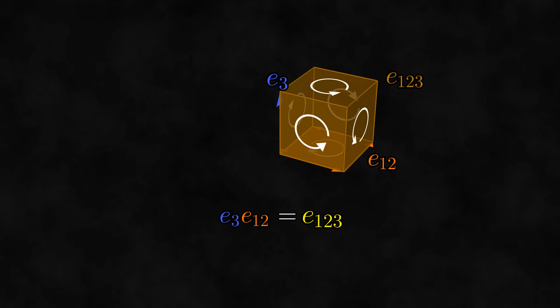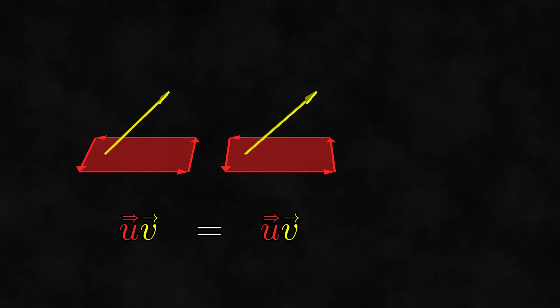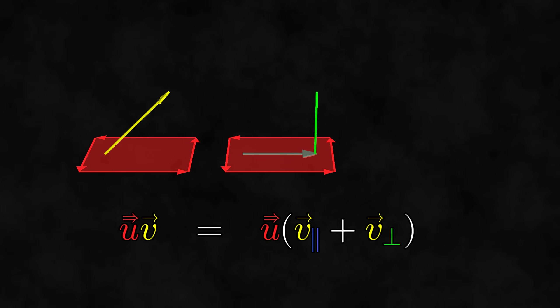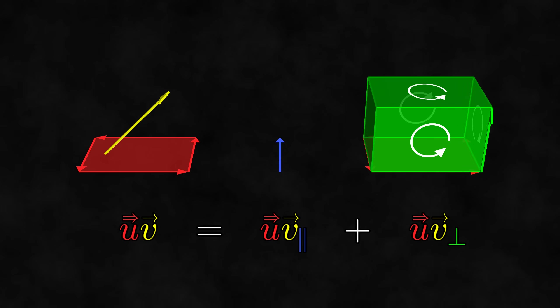But then what about the product of an arbitrary vector and bivector? We can do the same thing we did when multiplying arbitrary vectors: split the vector into two parts, one which is in the plane of the bivector and the other which is perpendicular to the bivector. We can then distribute and calculate these two products separately. The first term is the 90-degree rotation of the parallel vector, while the second term is the trivector joining the bivector and the perpendicular vector.